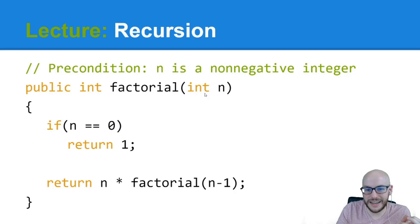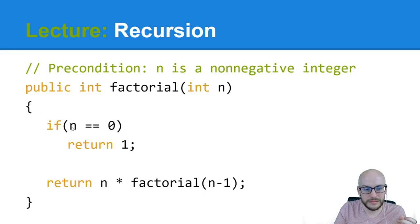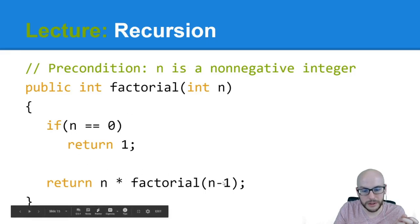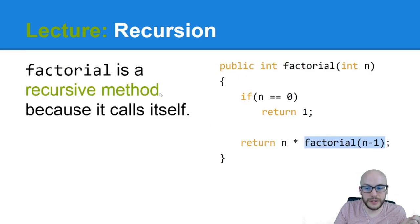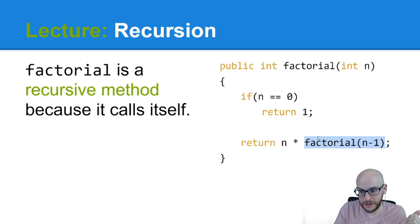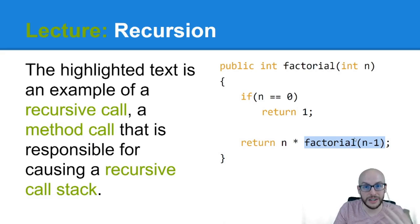There's a precondition on this method: n must be a non-negative number, meaning zero will work. We take in an integer n — the value we want to know the factorial of. Here we see our base case, and down here we see our recursive step along with our recursive call. The recursive call is where factorial is called within itself, which is what makes it recursive. This is specifically called the recursive call — the literal method call that causes the recursive call stack to form.